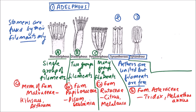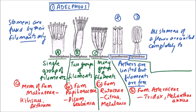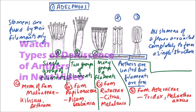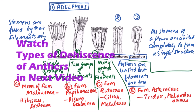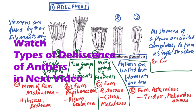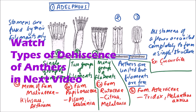The last one is the synandrus type of cohesion. In synandrus type cohesion, all stamens of a flower are united completely to form a single structure. This is observed in Cucurbita and Colocasia.